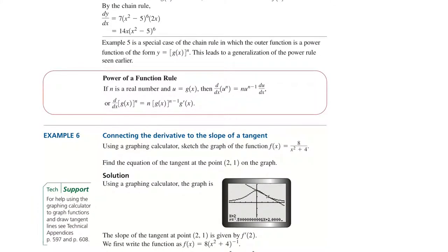We know the derivative of xⁿ is n times x to the power of n minus 1. The derivative of uⁿ would be n times u to the power of n minus 1, times u prime, where u prime is du/dx. This is the power of a function rule.